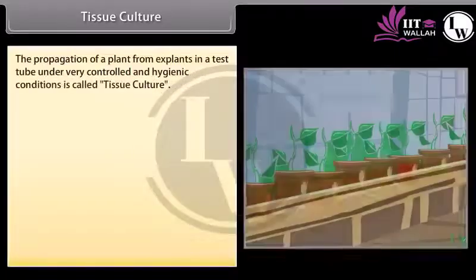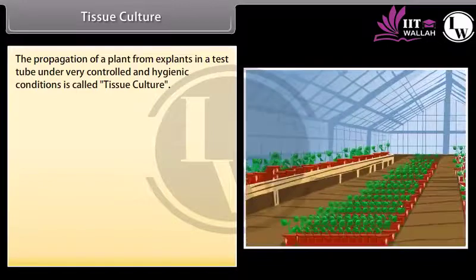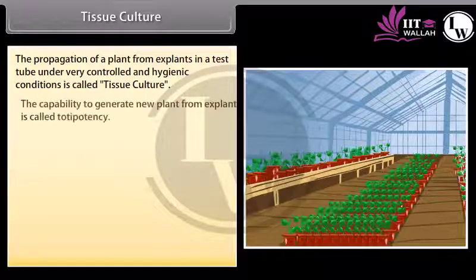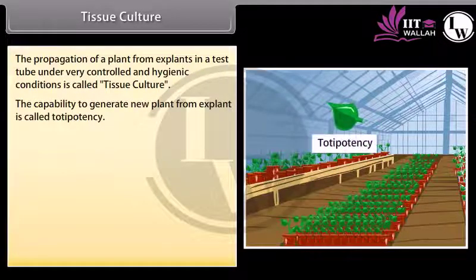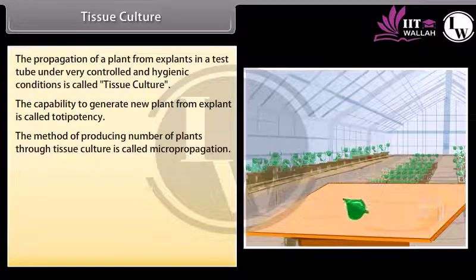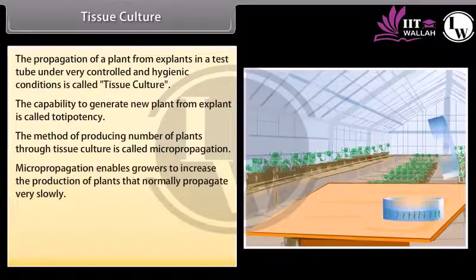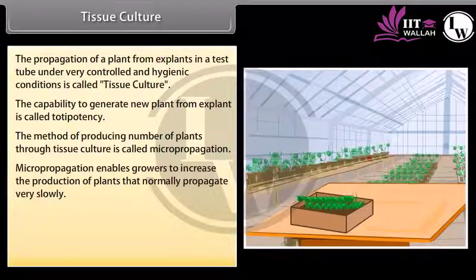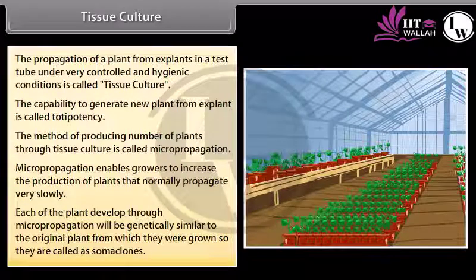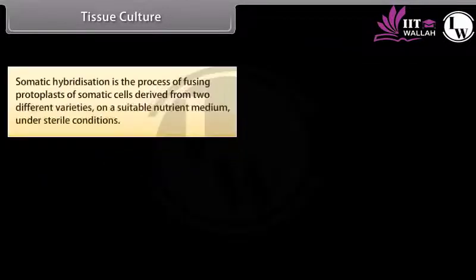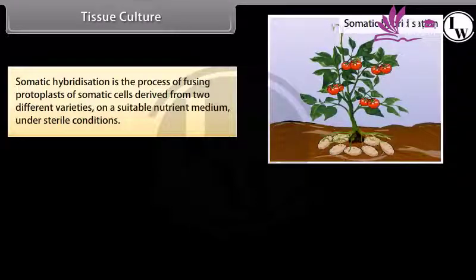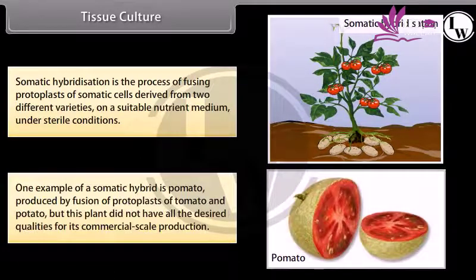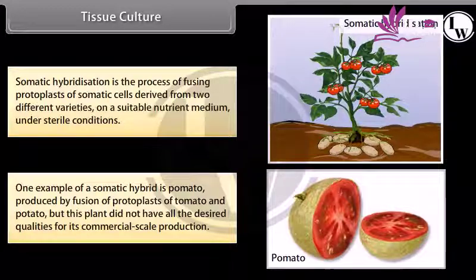Tissue culture: the propagation of a plant from explants in a test tube under very controlled and hygienic conditions is called tissue culture. The capability to generate a new plant from an explant is called totipotency. This method of producing plants through tissue culture is called micropropagation. Micropropagation enables growers to increase production of plants that normally propagate very slowly. Plants developed through micropropagation are genetically similar to the original plant and are called somaclones. Somatic hybridization is the process of fusing protoplasts of somatic cells from two different varieties on a suitable nutrient medium under sterile conditions. One example of a somatic hybrid is pomato, produced by fusion of protoplasts of tomato and potato, though this plant did not have all the desired qualities for commercial production.